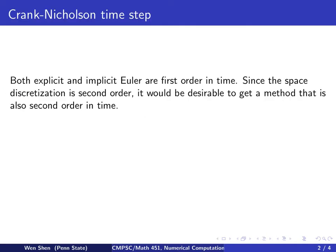We begin this video by making the observation that both the explicit and the implicit Euler time step are first order in time. And we have a space discretization using central finite difference that is second order. So it would be very desirable to match that order also for the time derivative. We would like to have a second order in time also.